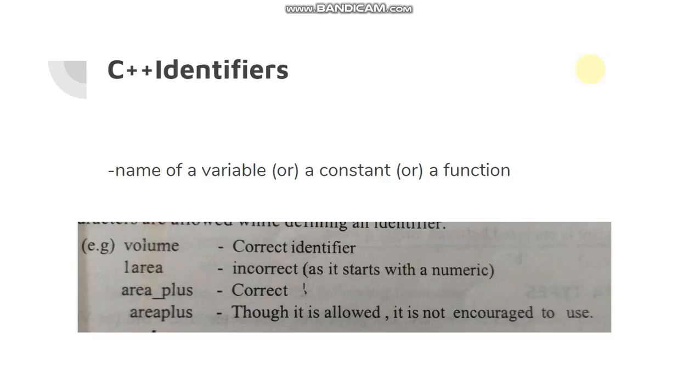C++ identifiers. The identifier may be the name of a variable or constant or a function. Usually, for all programming languages, the first character of the identifier will be an alphabet, followed either by number or alphabet.